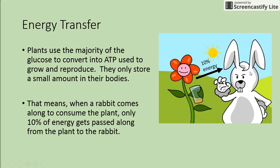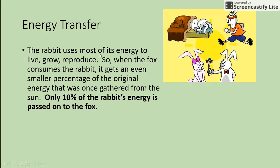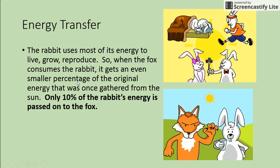In order to get the energy it needs, a rabbit has to eat a lot of plants. The rabbit then uses most of its energy to live, grow, and reproduce. So when the fox consumes the rabbit, it gets an even smaller percentage of the original energy — only ten percent from the rabbit is passed on to the fox. That's why the fox has to keep eating.